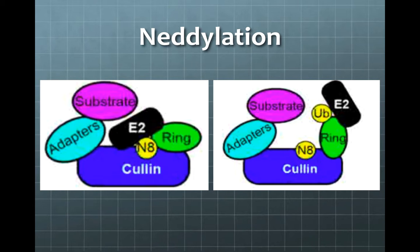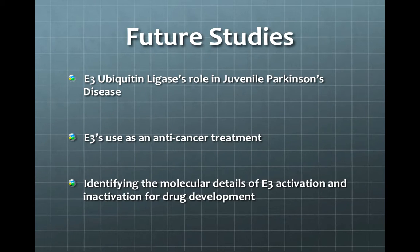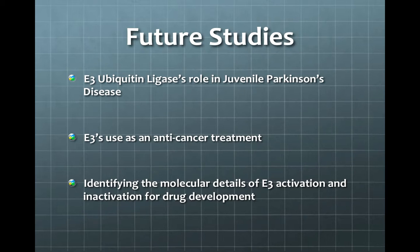Therefore, future directions for studying E3 ubiquitin ligase are nearly limitless. Mutations in E3 ligase have been shown to have a major role in Parkinson's disease in juveniles. This, in addition to its potential roles in cancer and various other diseases, makes it very important to study. Further research could lead to major pharmaceutical developments in the future.